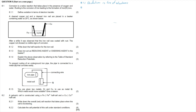Question 8.1.2 asks: write down the half-reaction for the iron nail. The iron nail undergoes corrosion, meaning the iron is being oxidized to form iron-3 ions (Fe³⁺). The half-reaction starts with iron, which loses electrons to become Fe³⁺ ions, giving off three electrons: Fe → Fe³⁺ + 3e⁻.